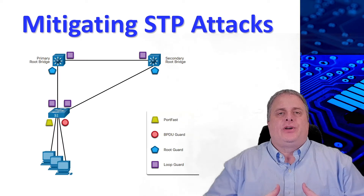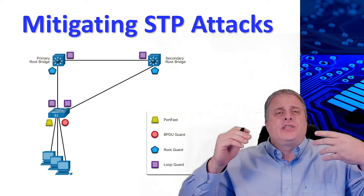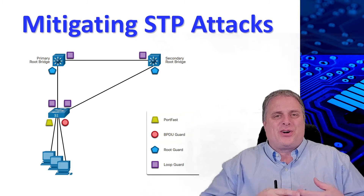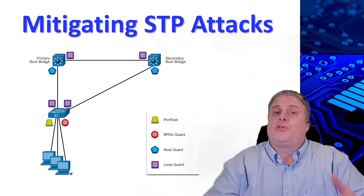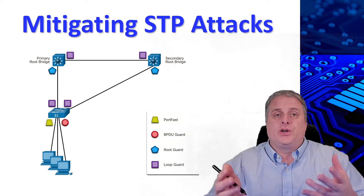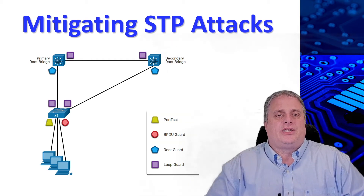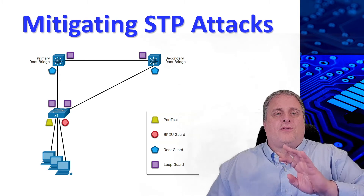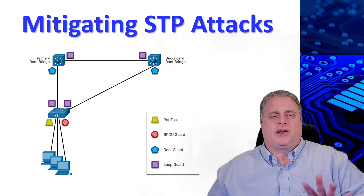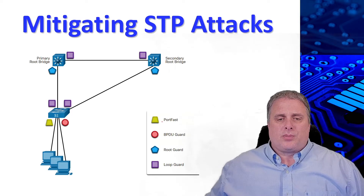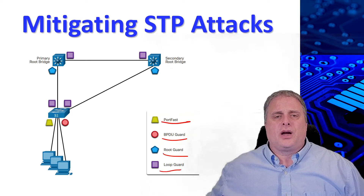To mitigate spanning tree protocol manipulation attacks, use the Cisco spanning tree protocol stability mechanisms to enhance the overall performance of the switches and to reduce the time that is lost during topology changes. There are four spanning tree protocol stability mechanisms: PortFast, BPDU guard, root guard, and loop guard.